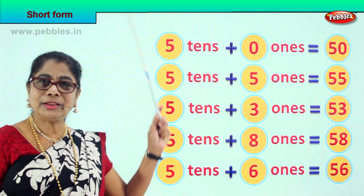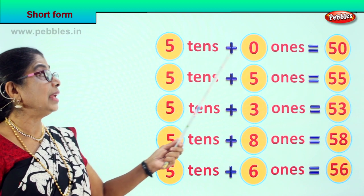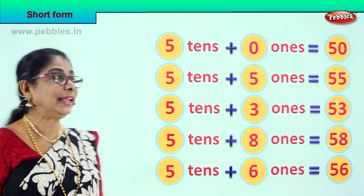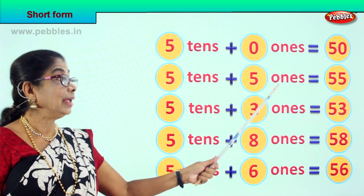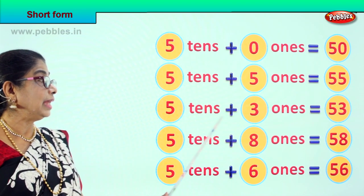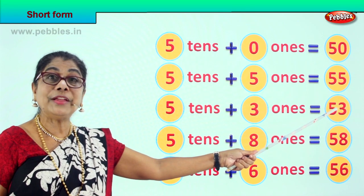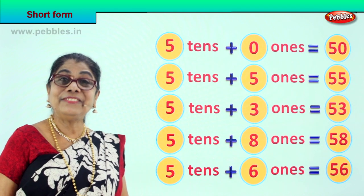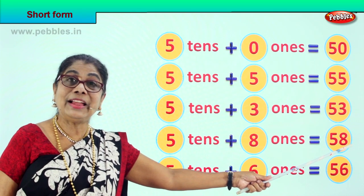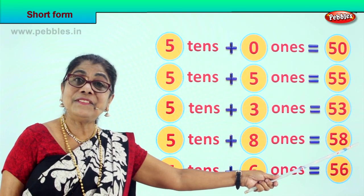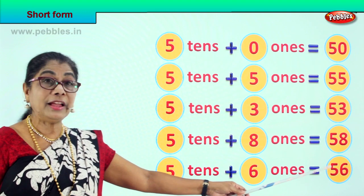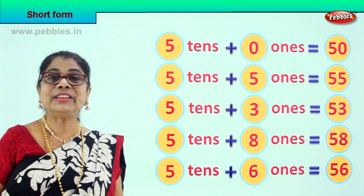Did you enjoy the short form? Okay, let's read this together. 5 tenths plus 5 ones equal to? 55. 5 tenths plus 5 tenths? 55. 5 tenths plus 8 ones is equal to? 58. 5 tenths plus 6 ones is equal to? 56. 5 and 6? 56.